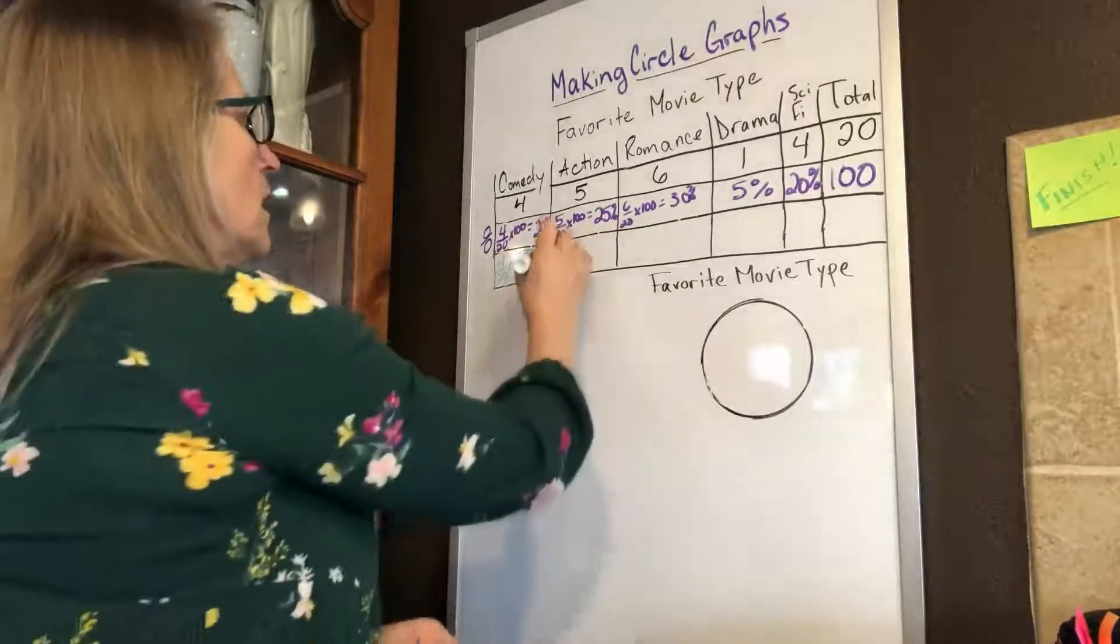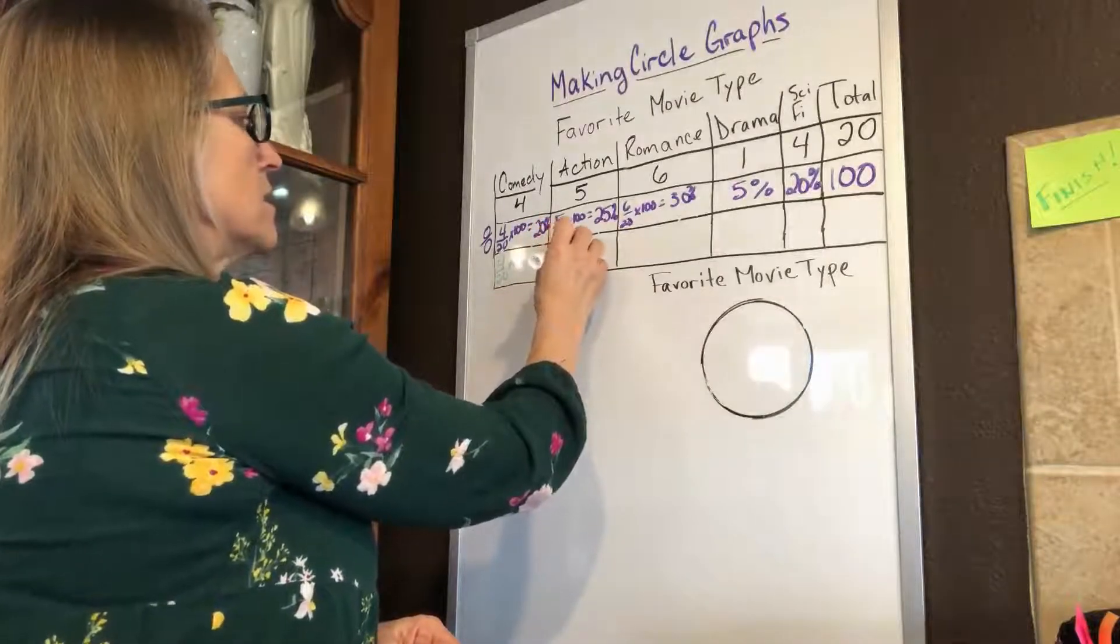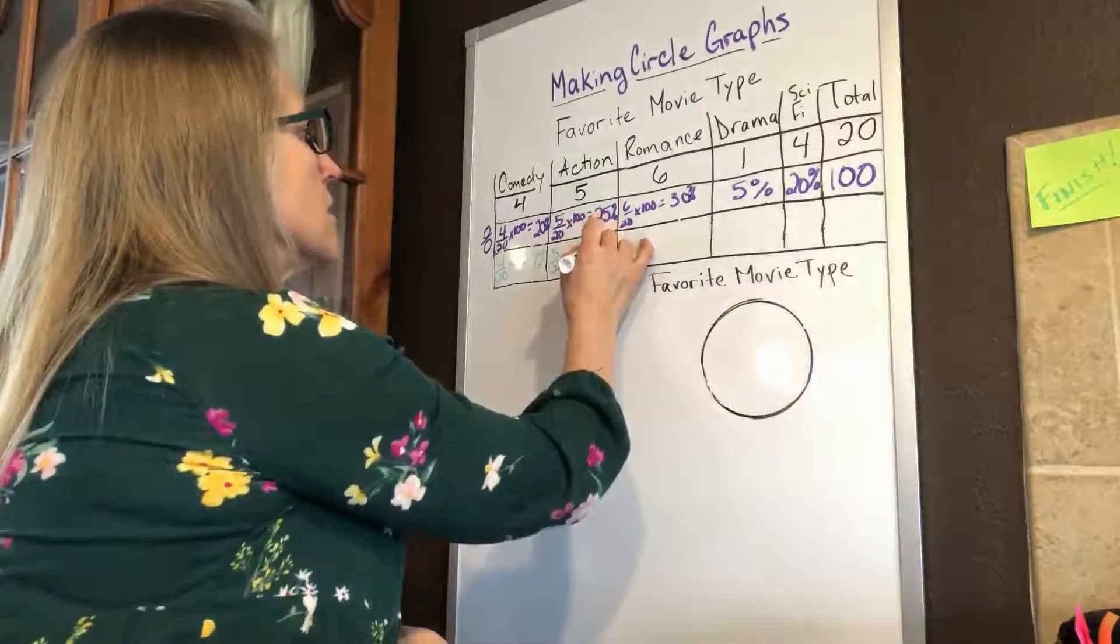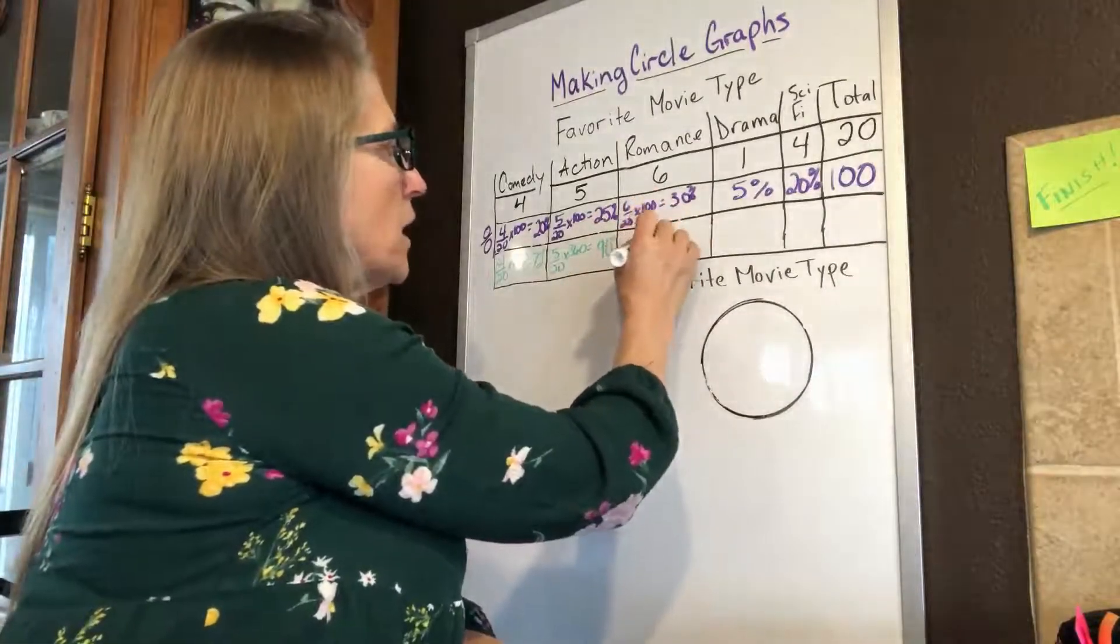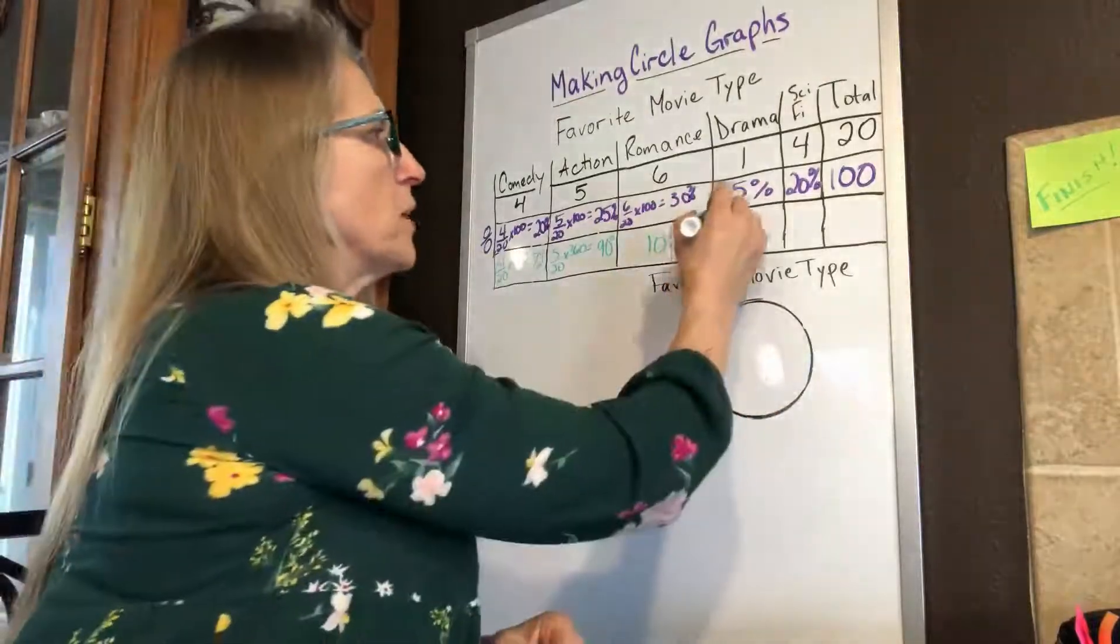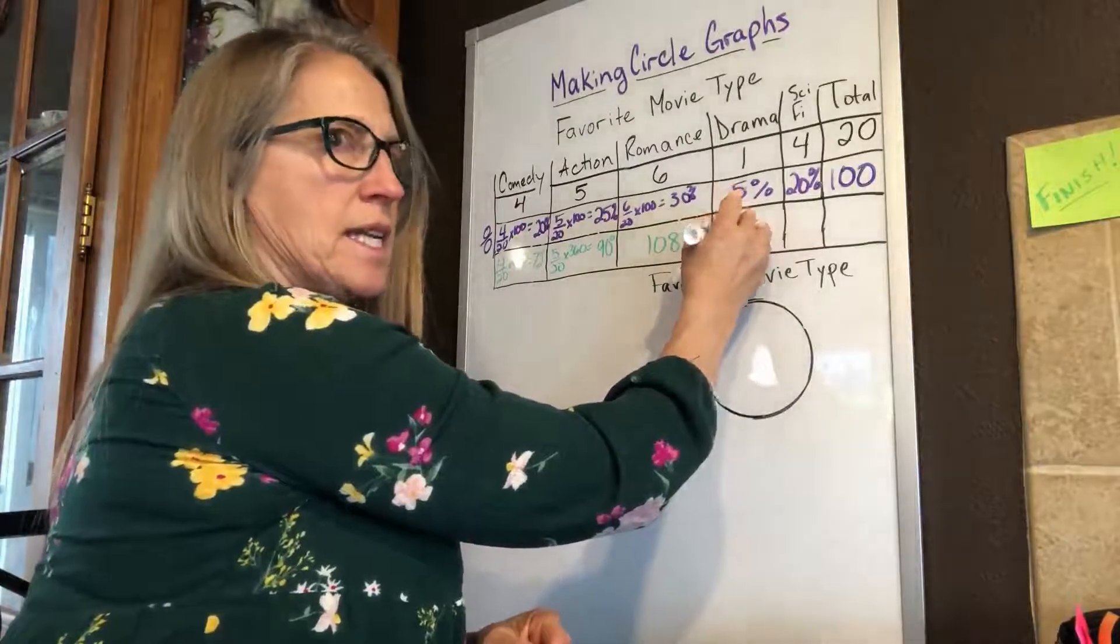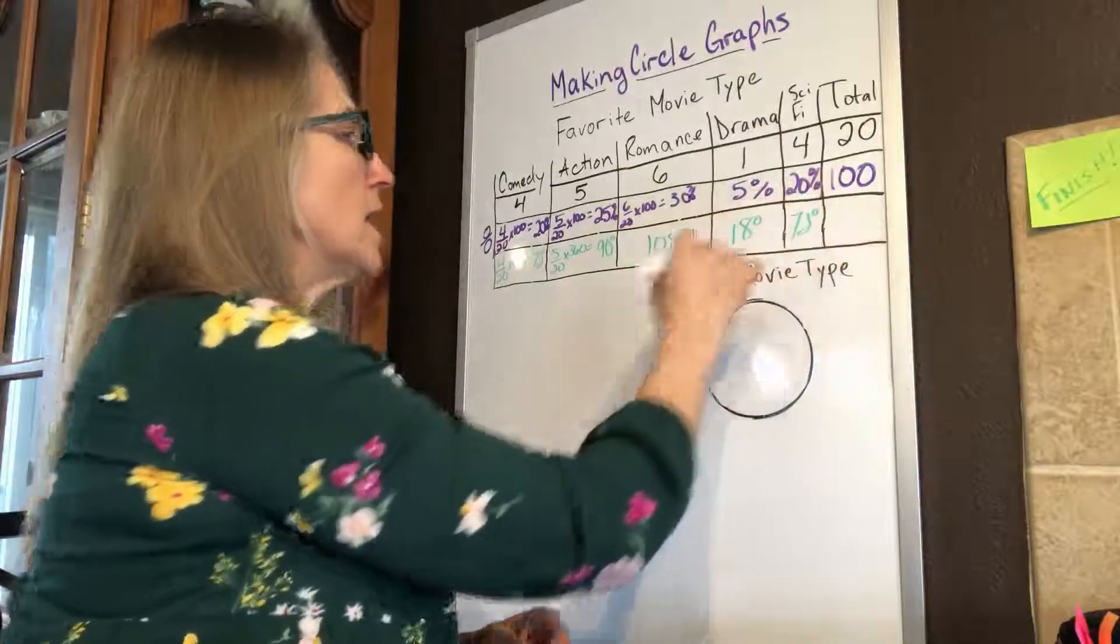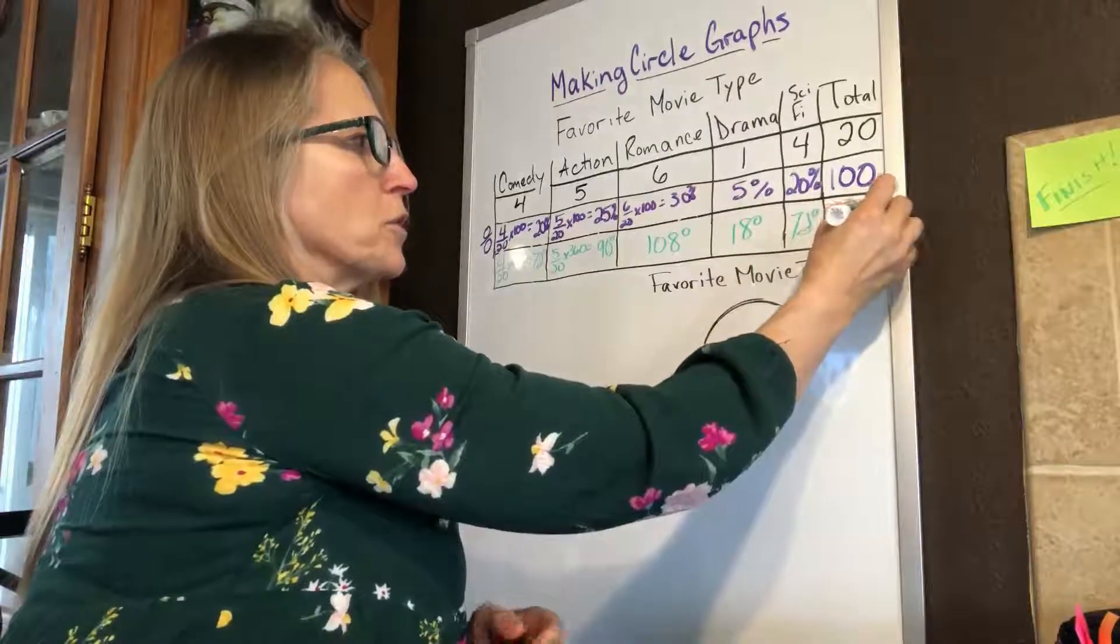And we would do the same thing here times 360. That's going to give us 90 degrees. This one works out to be 108 degrees. And 5% of 360 is 18 degrees. And again, our 20% is going to be 72 again. As we add these across, they should total our full circle.